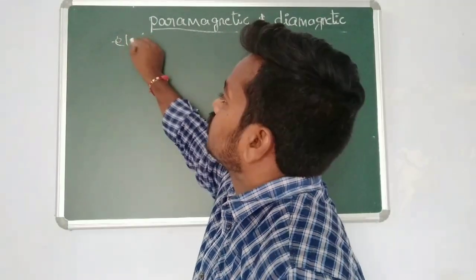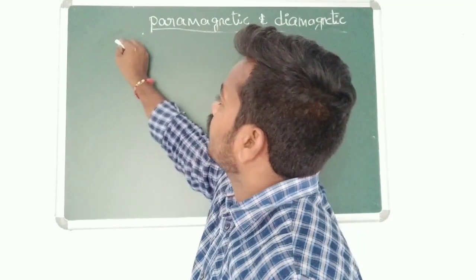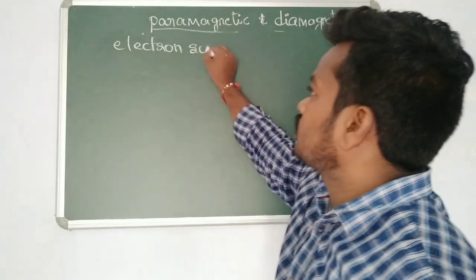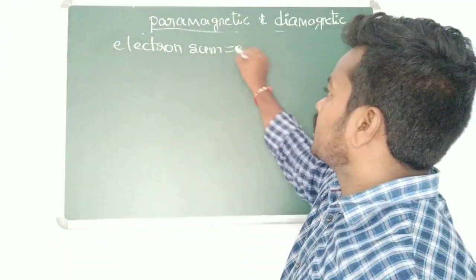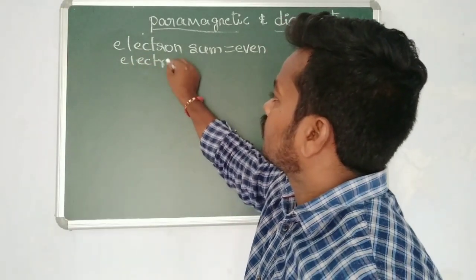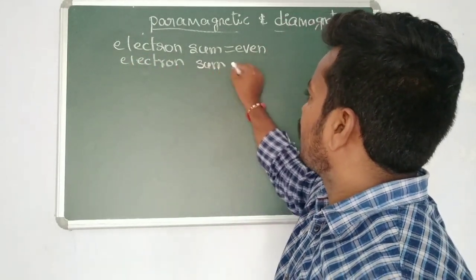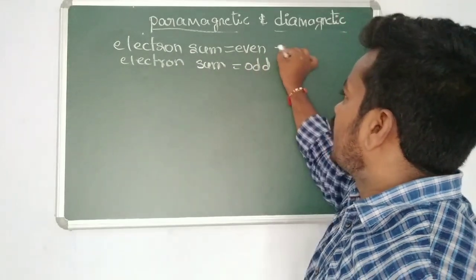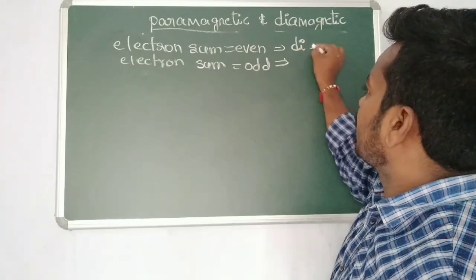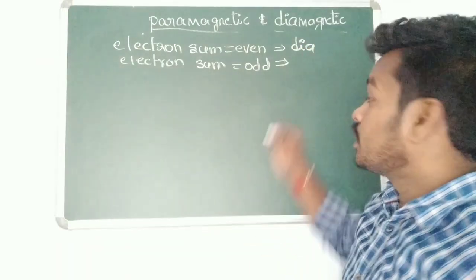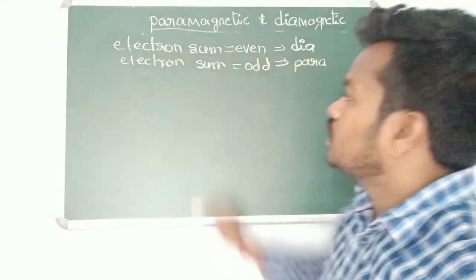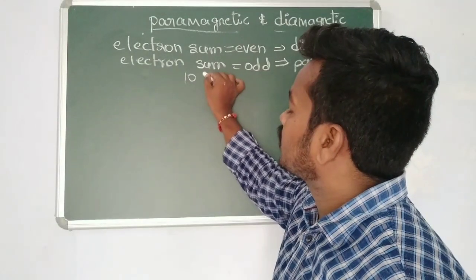You count the electron sum. If you get an even number, the species is diamagnetic in nature. If you get an odd number, the species is paramagnetic in nature. So: electron sum even = diamagnetic; electron sum odd = paramagnetic.